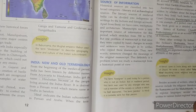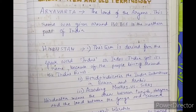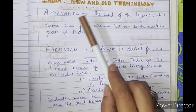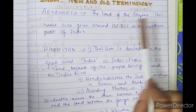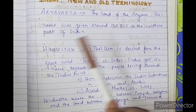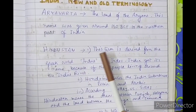Let's start with the first topic: new and old terminology. Across the ages, India has been referred to by different names; however, the area of land suggested by each name has often differed. The more famous among these names is Arya Vata — the land of Aryans. This name was given around 150 BCE to the northern part of India.